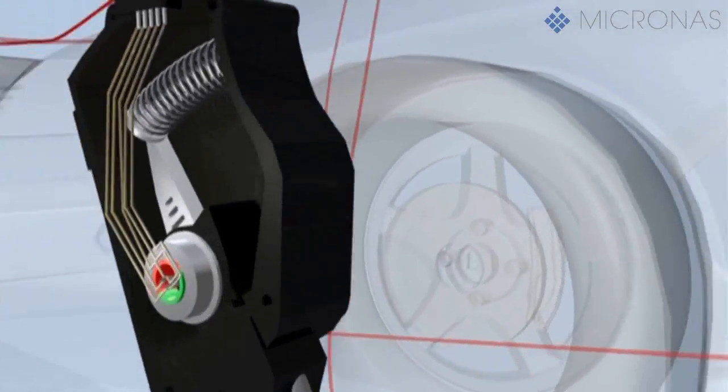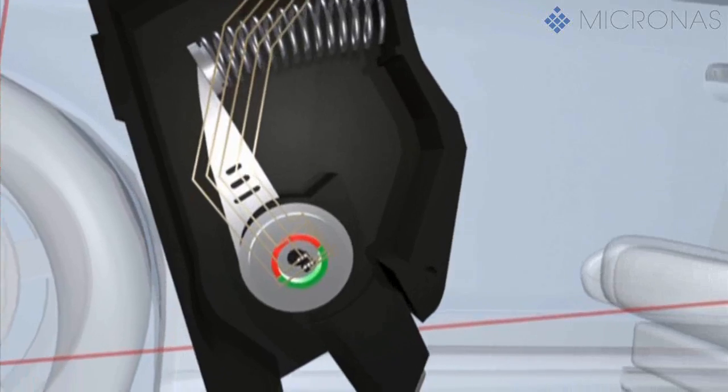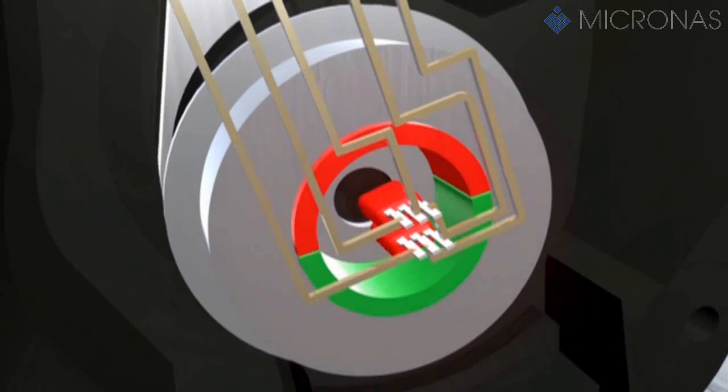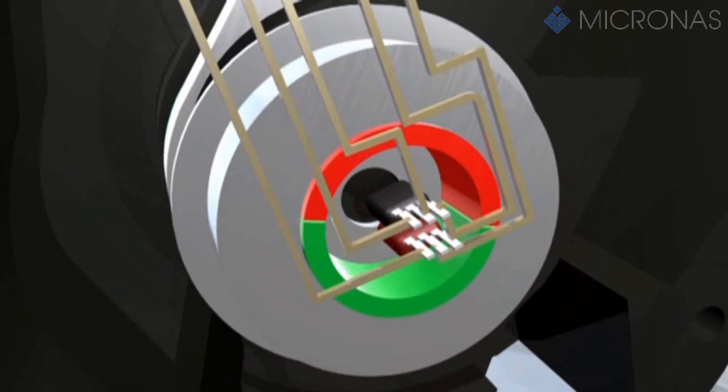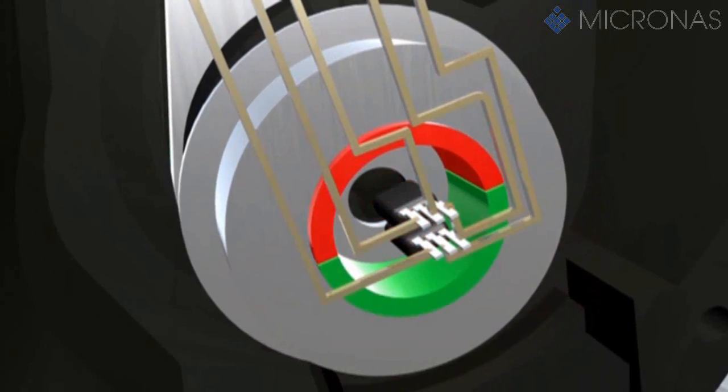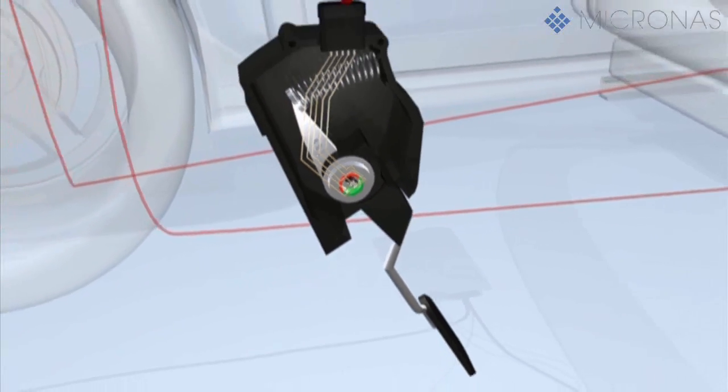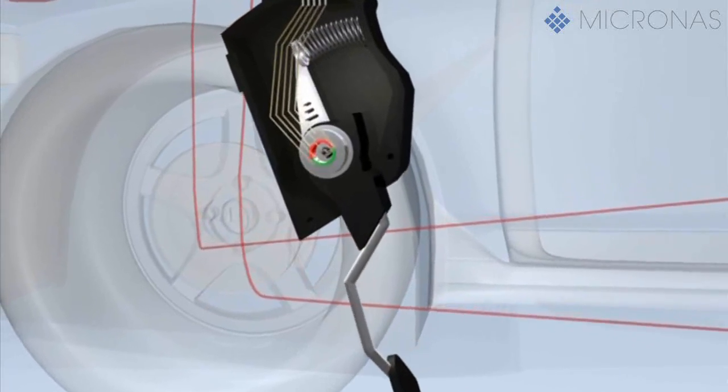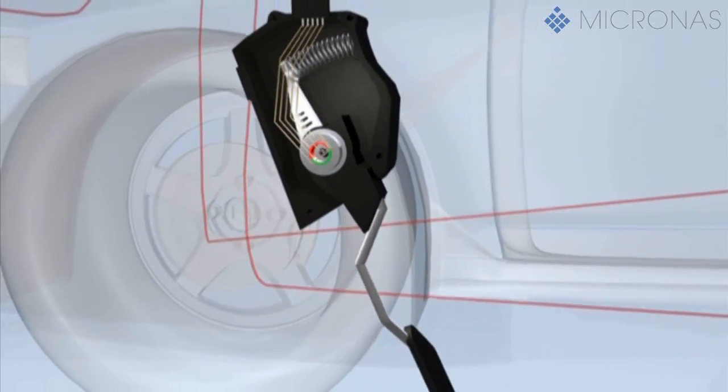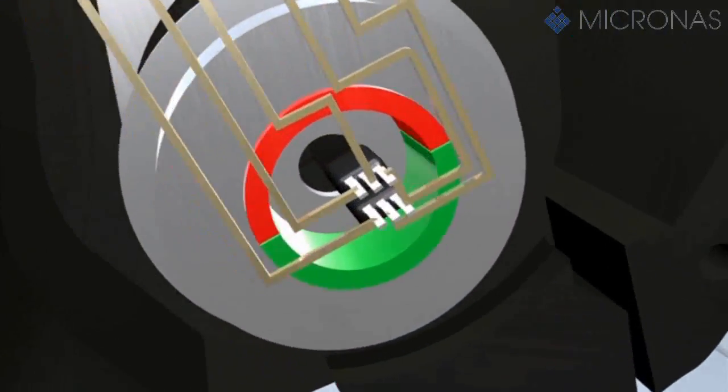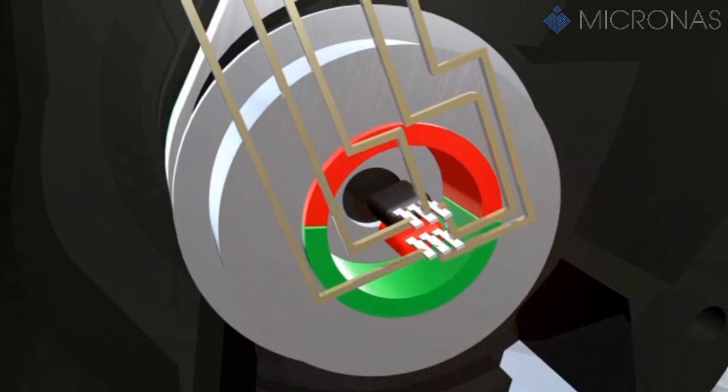A hollow ring magnet with a north-south division and two hall sensors are used inside the pedal. While the magnet rotates when the pedal is activated, the hall sensors remain in a fixed position. They measure the magnet's angle of rotation and transmit a corresponding output signal to the engine control unit.